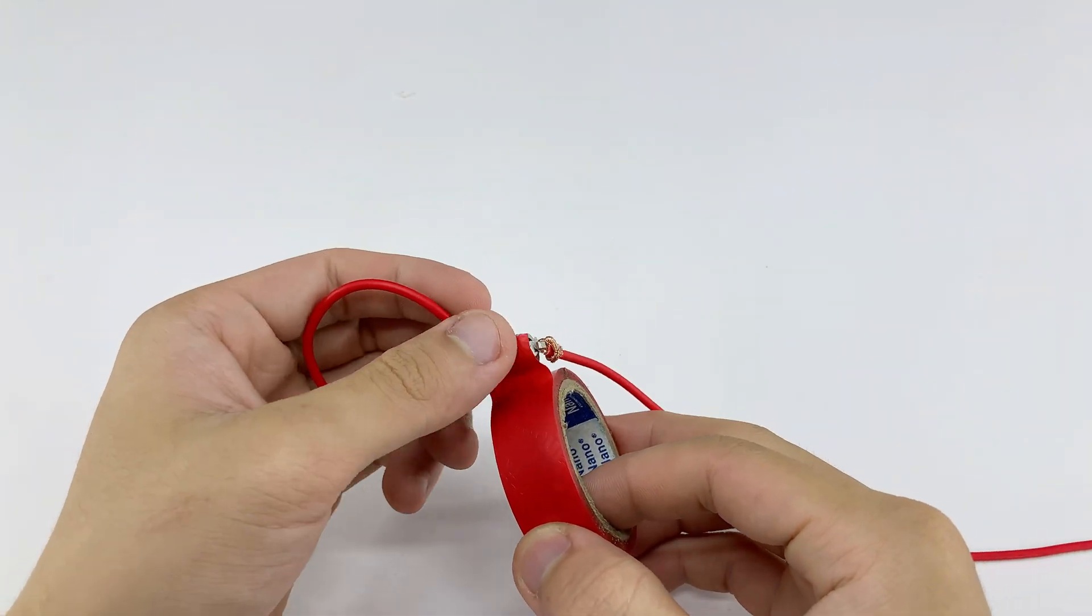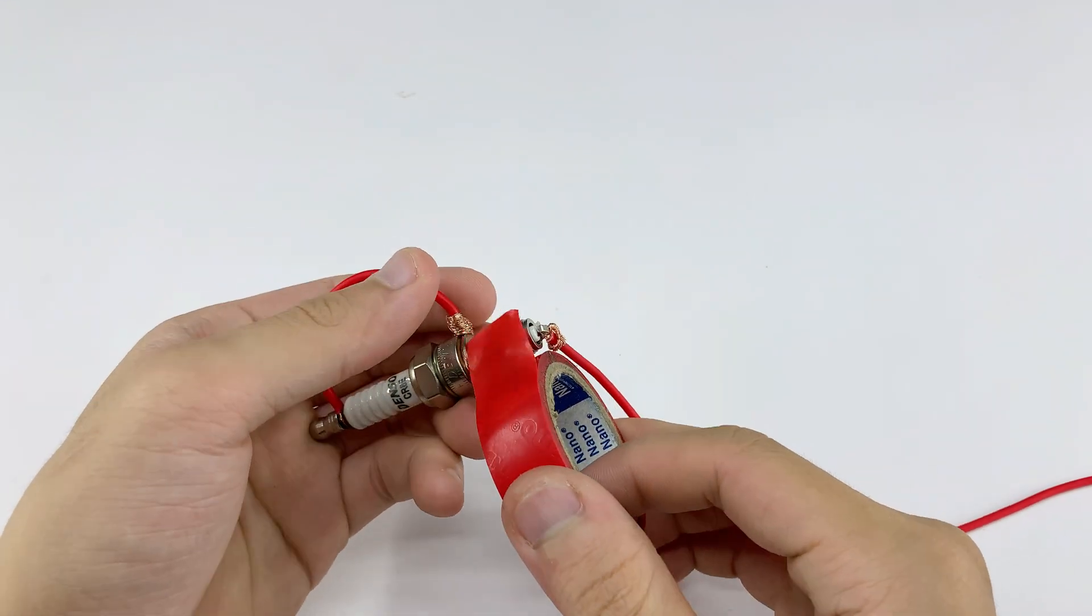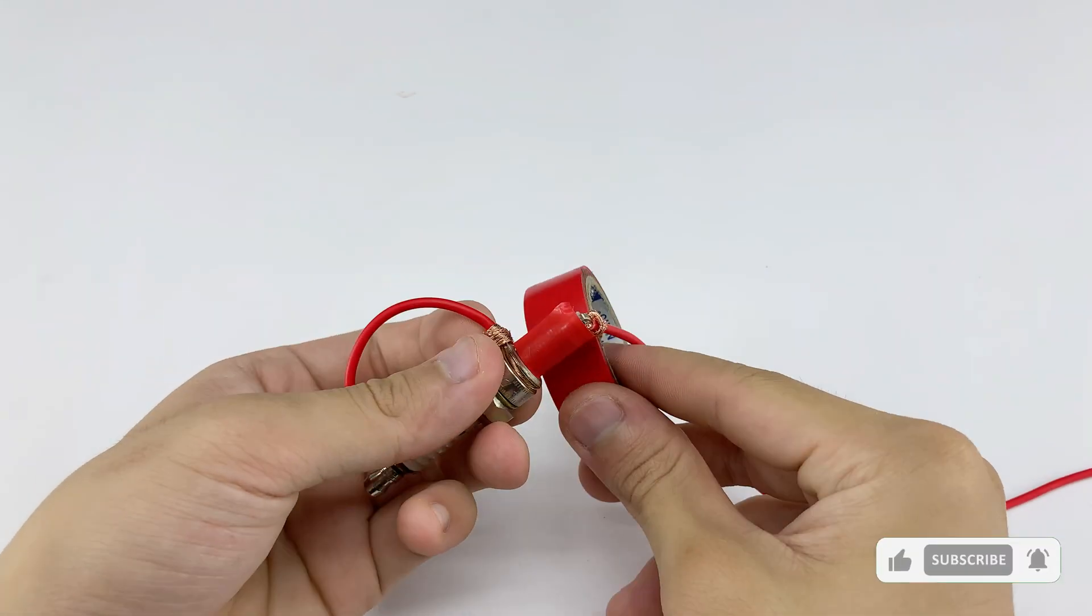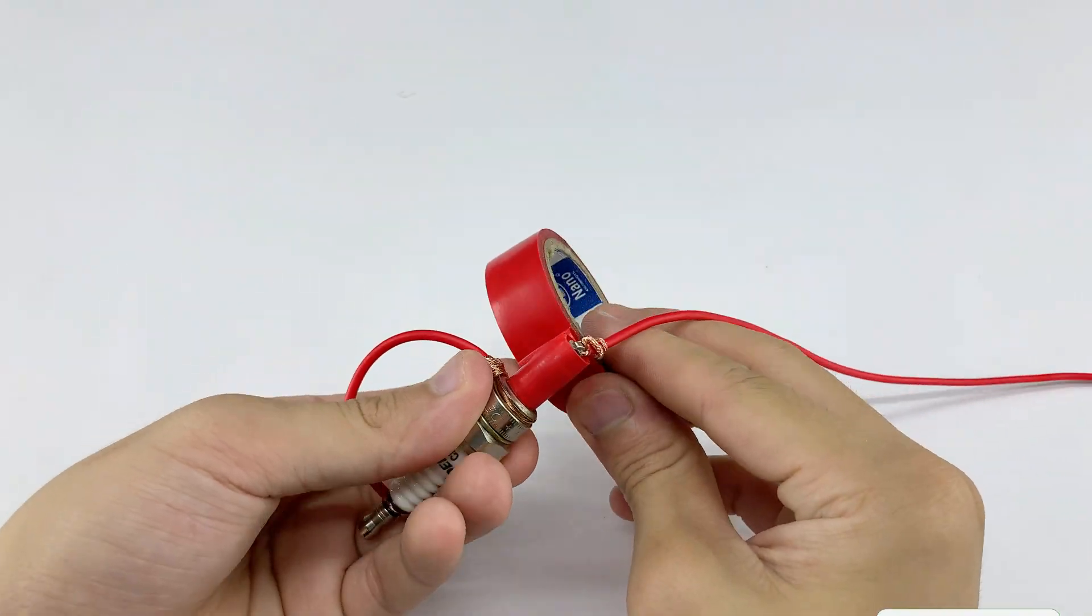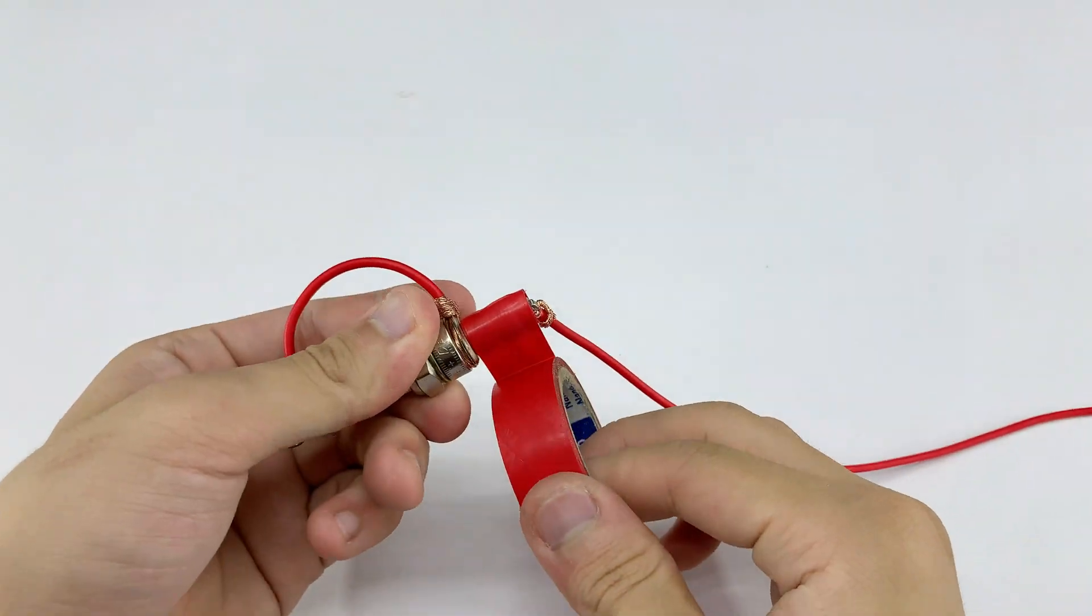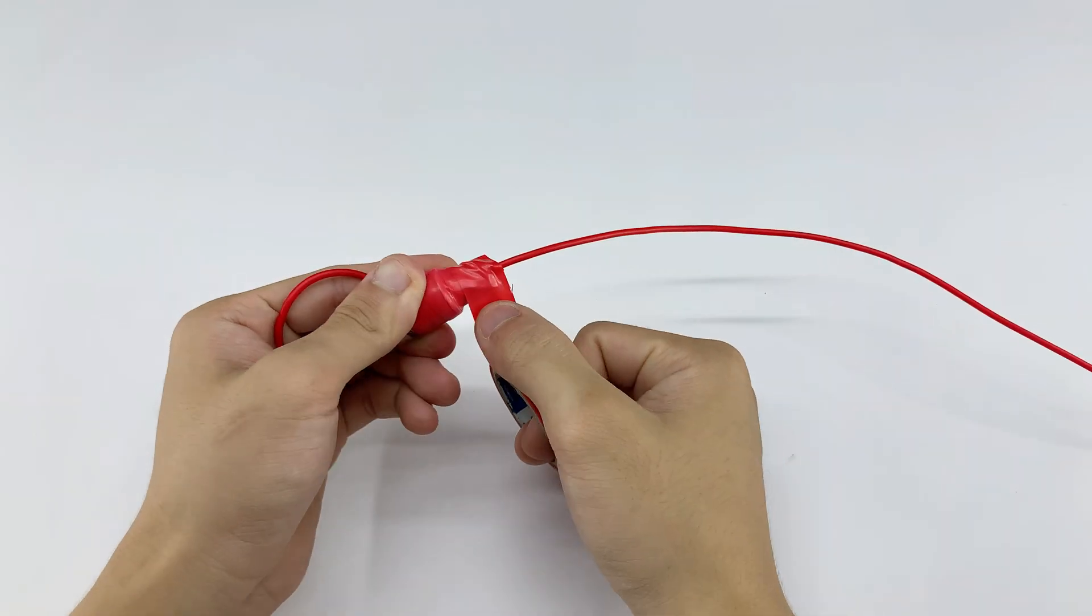For extra safety when working with electricity, we'll wrap some tape around the spot where the wire touches the ground terminal. This keeps the connection secure and prevents short circuits. It's a small step but really important, especially when dealing with higher currents.